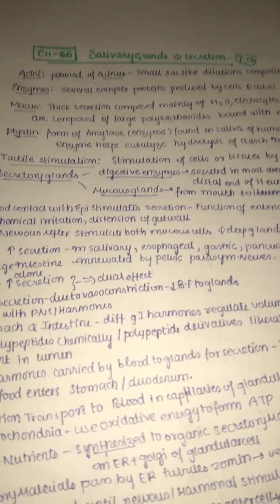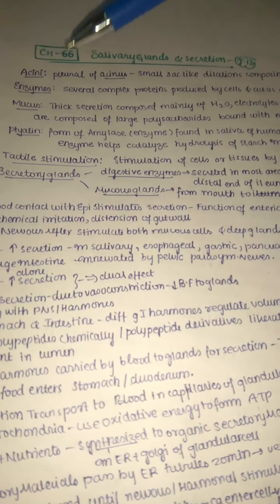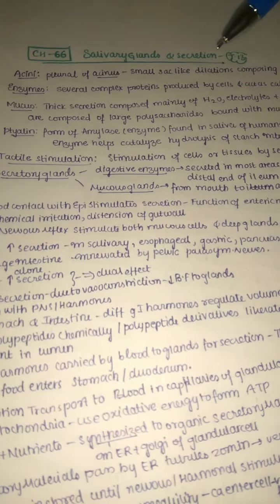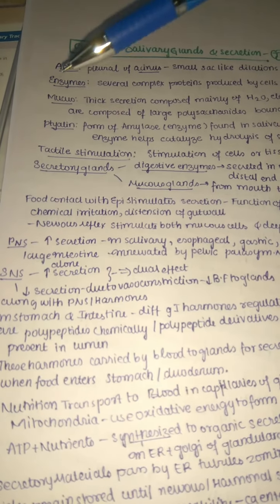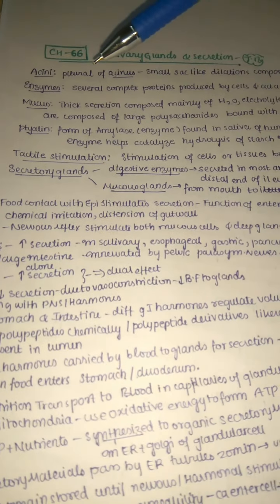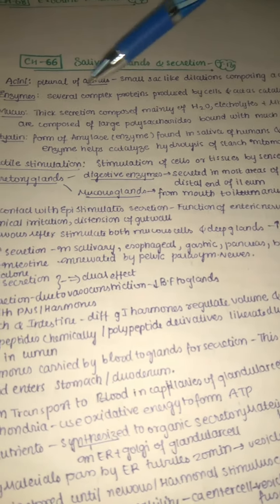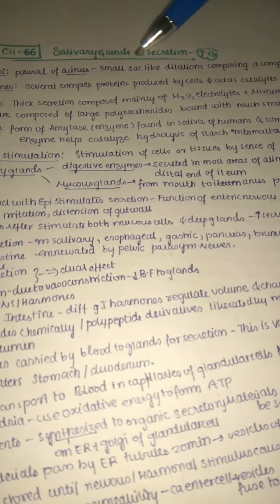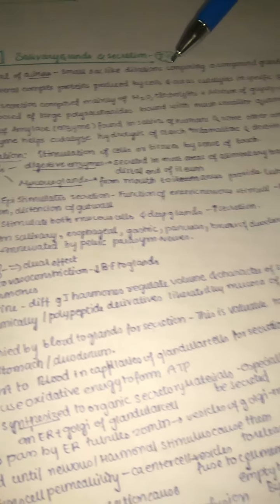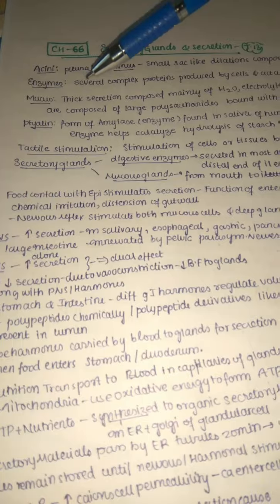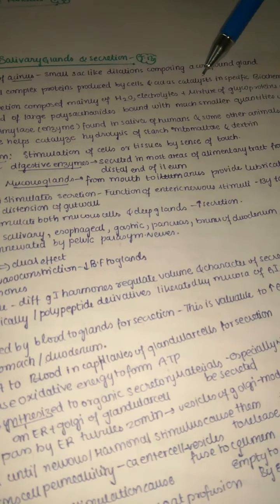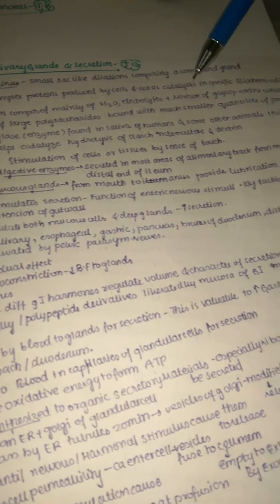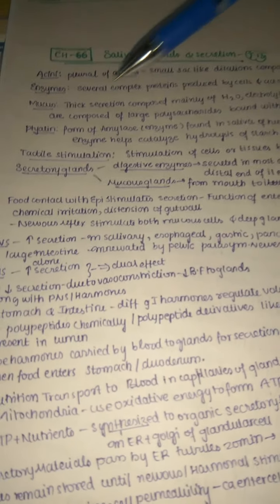Welcome back. We're going to start Chapter 66 on salivary glands and secretion. First, let us start with the glossary terms. An acinus is a small sac-like dilation which is composed of a compound gland. Enzymes are several complex proteins which are produced by cells and act as catalysts in specific biochemical reactions.